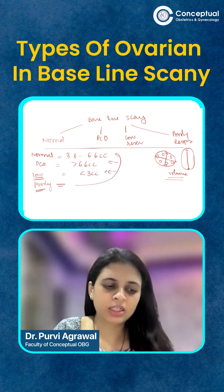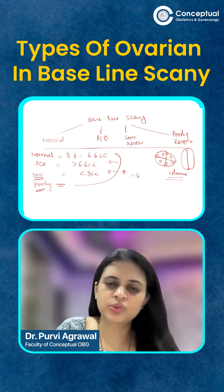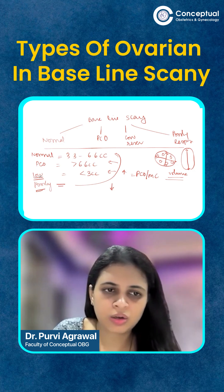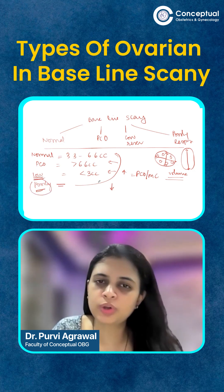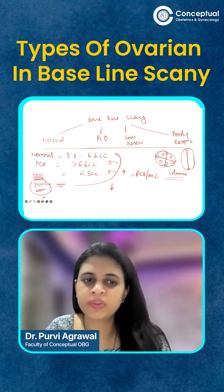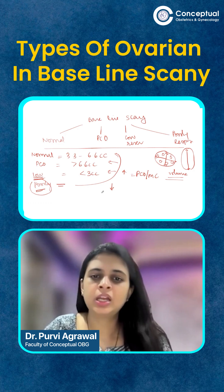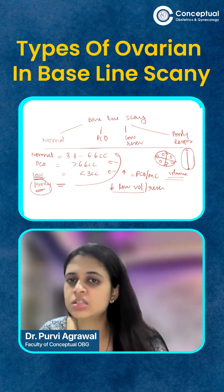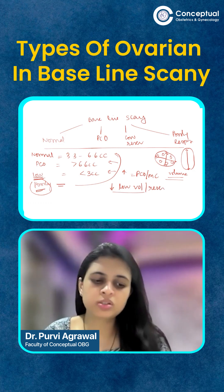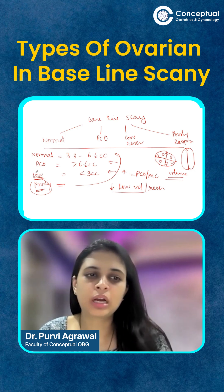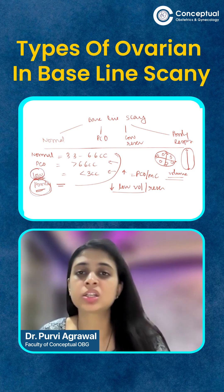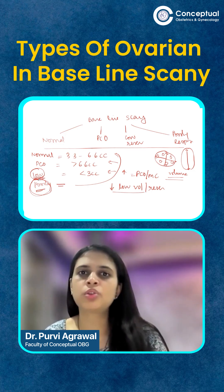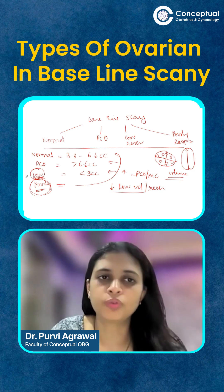Increased volume is usually seen in PCOS or multicystic ovaries, and decreased volume is usually a low reserve ovary. A poorly responding ovary can be of any volume — it is simply about whether it is ovulating, responding to drugs, or getting stimulated. A low reserve ovary does not mean it will not ovulate. Low reserve means it has fewer follicles but can still ovulate. Poorly responding means it does not respond to your drugs, so it may not ovulate.